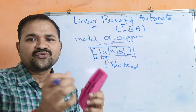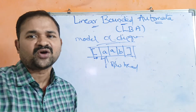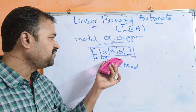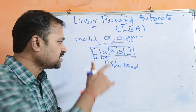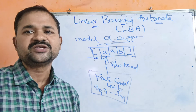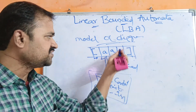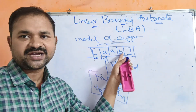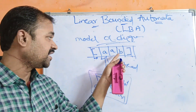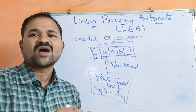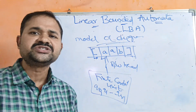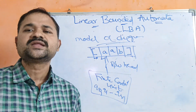M represents the end markers. We have two types: a left end marker and a right end marker. Before the input string we have the left end marker, and after the input string we have the right end marker. This is the formal definition of linear bounded automata.